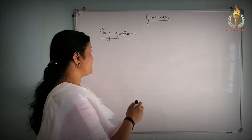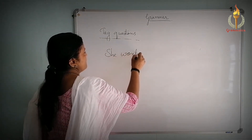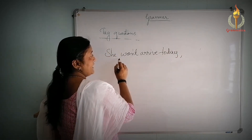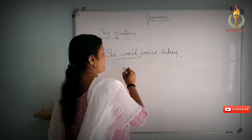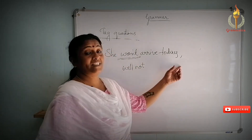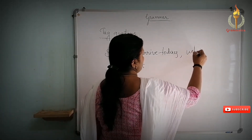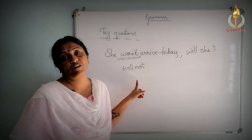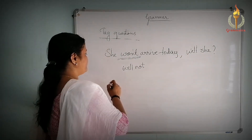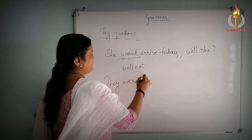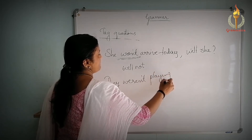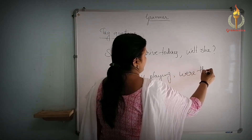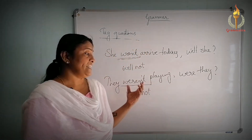For negative sentences: 'She won't arrive today' — 'won't' is 'will not,' so since it is negative, the tag is positive: 'will she?' So: 'She won't arrive today, will she?' Similarly, 'They weren't playing' — 'weren't' is 'were not,' so the tag is: 'were they?' This is how you form tags for negative sentences.